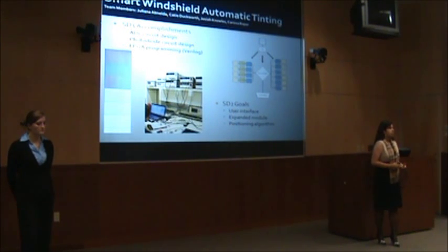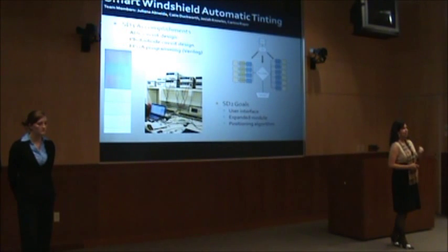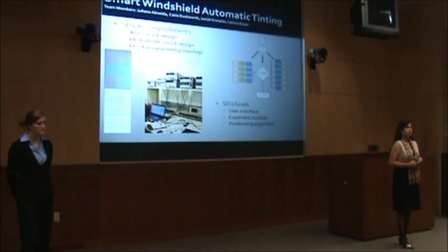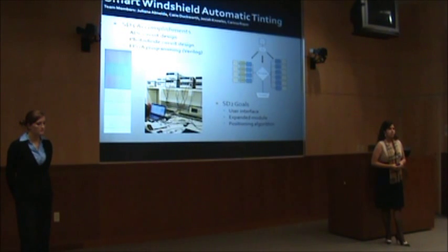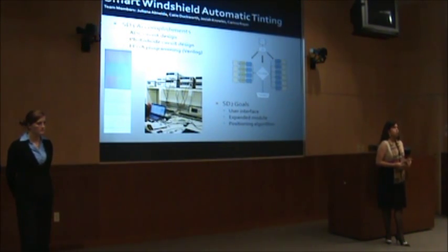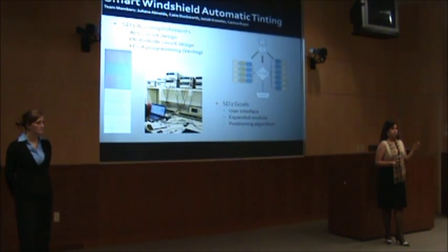Depending on the light level, the screen would dim to a certain gray level with the amount of red, green, and blue. Some of the design problems we had were that the initial MSP430 internal ADC we were using wasn't suitable because of the short range of the photodiode. But next semester, we are planning on using it along with a positioning algorithm with multiple screens so we will be able to adjust them one screen at a time, as our main goal.